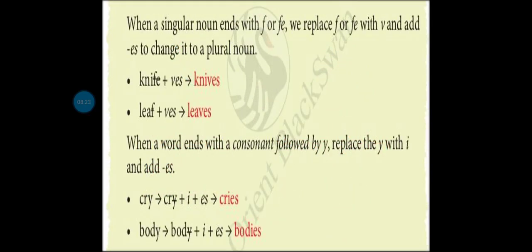When a singular noun ends with f or fe, we replace f or fe with v and add es to change it to a plural noun. Koi bhi singular noun hai jiske last mein f ya fe aata hai, to hum f ya fe ko remove karke uske badle v-e-s add karenge. For example: knife — k-n-i-f-e — knife yaani chhuri, jisse hum vegetables ya fruits cut karte hain. Uska plural banane ke liye last se fe remove karke ves add karenge: knives.